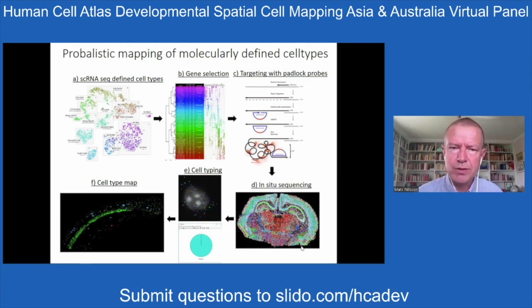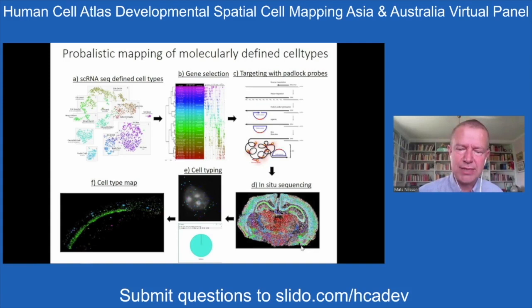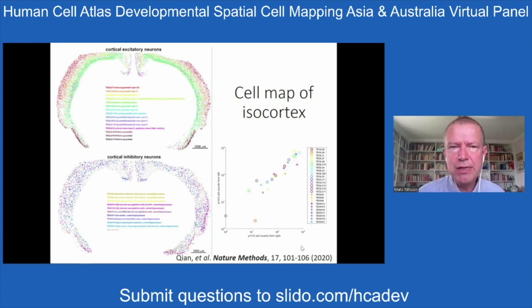Another aspect of our work is probabilistic cell mapping. The objective is to go from cell clusters from single-cell RNA sequencing and map those clusters onto tissue sections. We do this by selecting marker genes for different clusters, developing assays, profiling them in situ, assigning gene reads to individual cells, and matching these cell compositions to the RNA sequencing data.